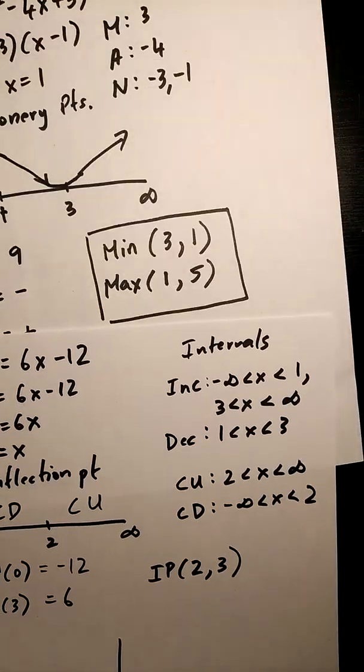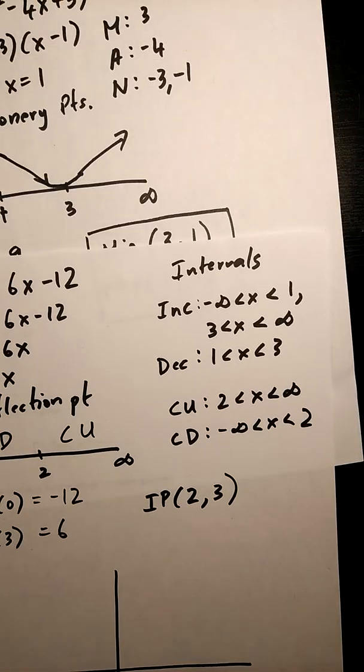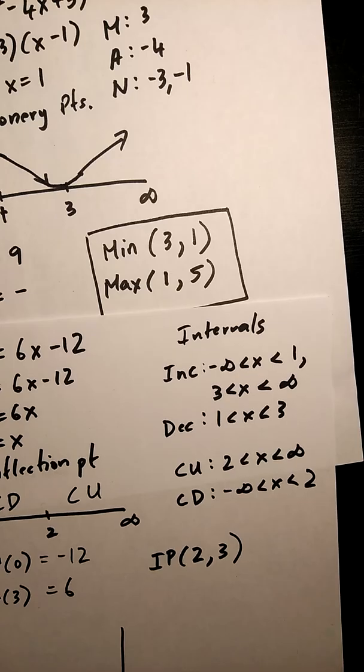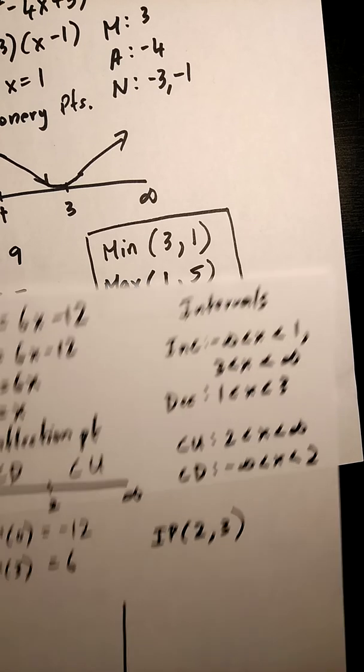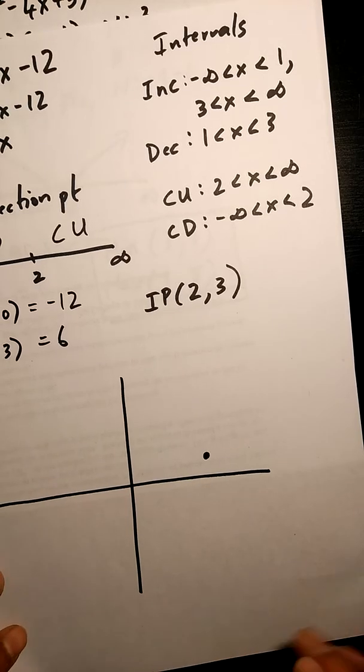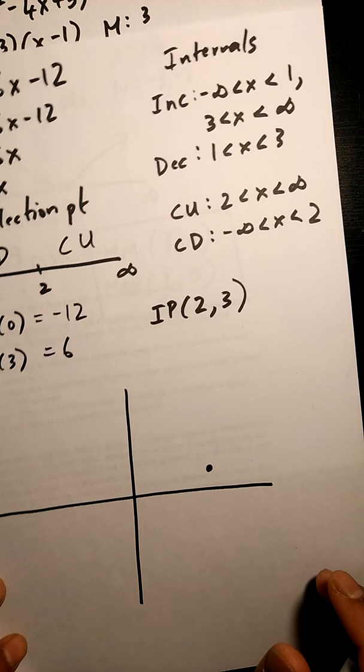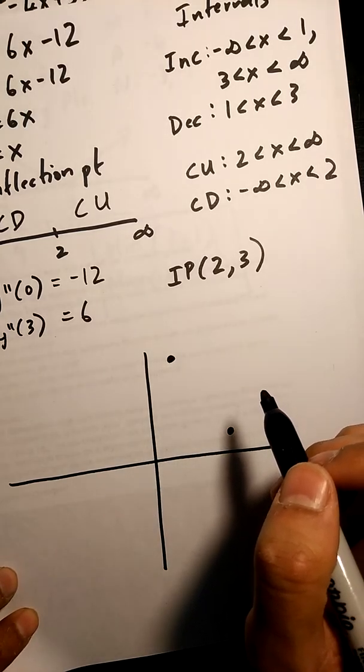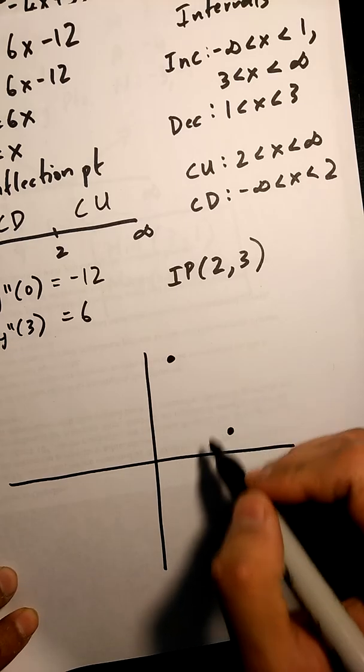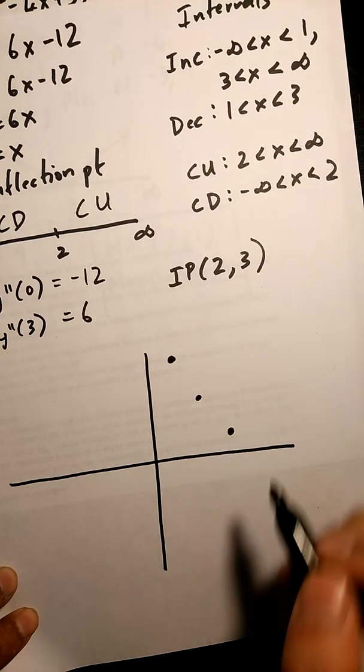First thing I'm going to do is put my min, three one is my min, then I'm going to put my max which is one five, and then I'm going to mark my inflection point as well in between.